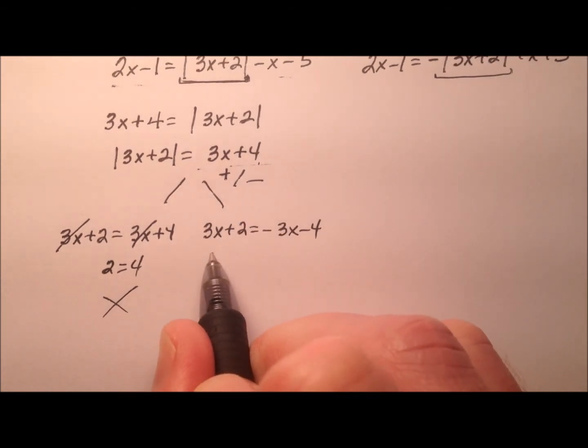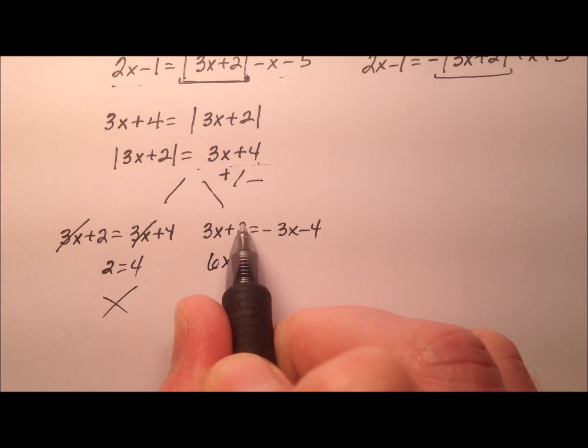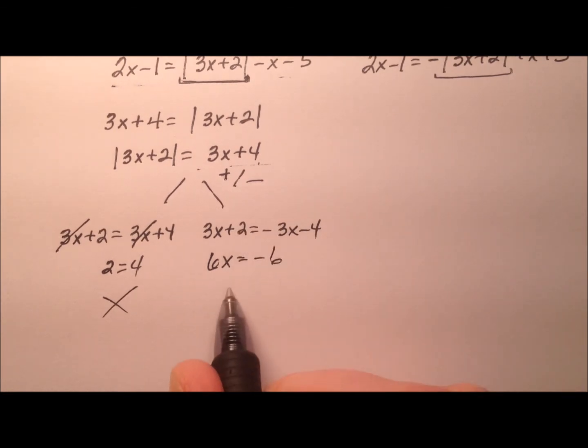So on this one we'll add 3 to both sides and get 6x. We'll subtract 2 to get negative 6. So x equals negative 1. So there's one possible value for x.